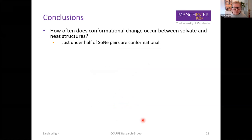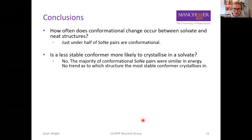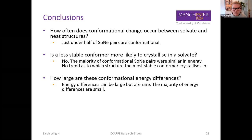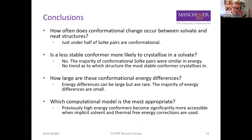In summary, we found that just under half of our solvate-neat pairs are conformational. The majority of conformational solvate-neat pairs are similar in energy with no trend as to which structure contains the most stable conformer. Large energy differences are possible but rare, with most energy differences being quite small. Previously high-energy conformers can become much more accessible when solvent and thermal effects are accounted for.